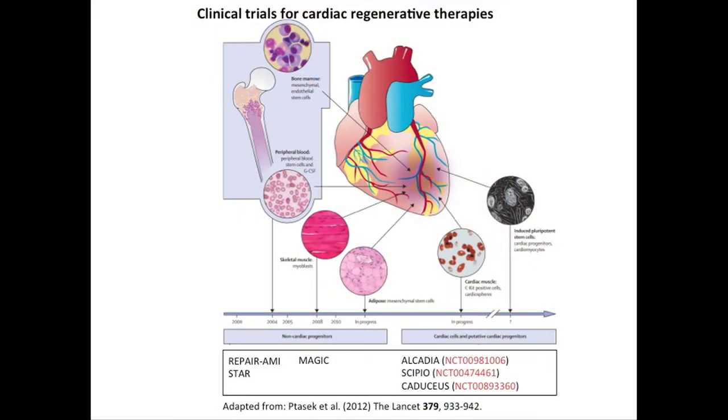As a result, the field — informed by basic science discoveries in rodent and preclinical models but moving into clinical cardiology — has entered a clinical trial environment attempting to use different cell types: bone marrow, skeletal myoblasts, and resident cardiac stem cells taken from patients, expanded, and put back in. So far the improvement in patients is modest at best; the improvement in left ventricular ejection fraction is around 3%, which will hardly get a heart failure patient up a flight of stairs.